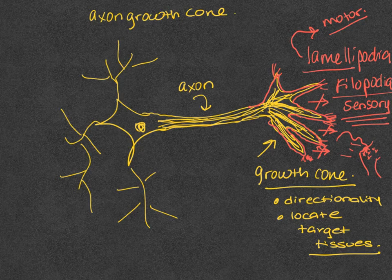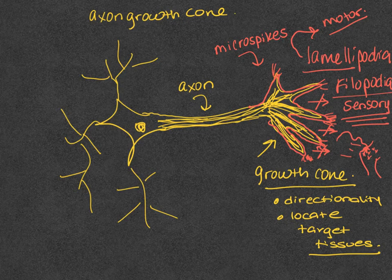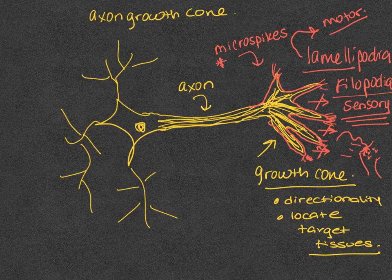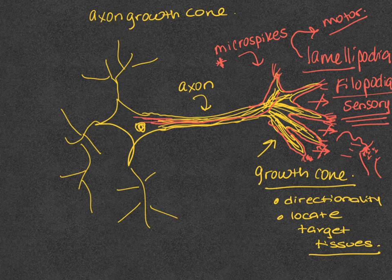So these microspikes, apart from attachment, also serve as a relay center for the neuronal cell, which picks up sensory cues and sends this information back to the cell body.